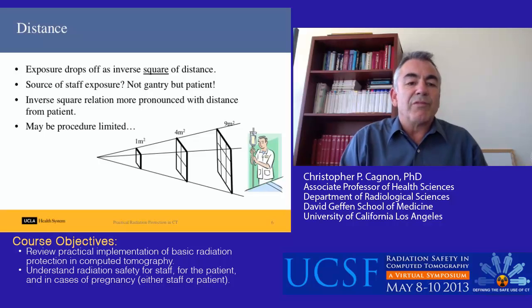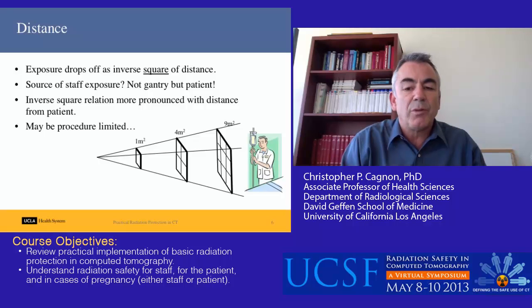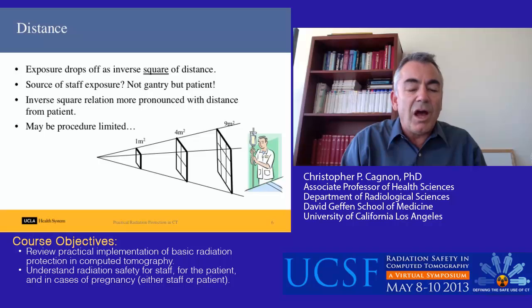Distance — everyone should be familiar with this one. Exposure drops off as the inverse square of the distance. Strictly speaking, this assumes the source of radiation is a point, but in fact the actual source of staff exposure when they're in the scan room is the patient — it's the point where the beam is entering the patient, not the gantry. The greater distance you are from where the beam enters the patient, the more pronounced the inverse square relationship becomes.